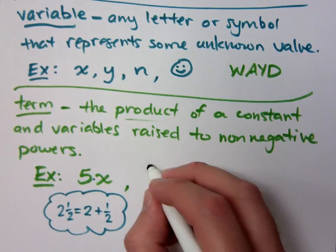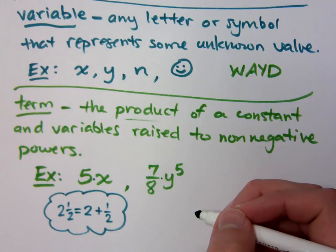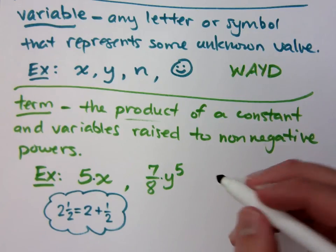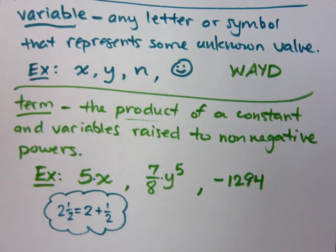I could pretty much put anything together. I could put 7/8 along with y to the 5th. That's an example of a term. I've got a constant, 7/8, times a variable raised to a non-negative power, to the power of 5. I mean, as stated before, even if I were to just write this number, negative 1,294, that number by itself is considered a term. So you have three different terms here that I have written out. So it doesn't have to have a variable. It says raised to non-negative powers. The number 0 is non-negative because it's 0. And so we could imagine this having x to the 0, but x to the 0, as long as x doesn't equal 0, anything to the 0 power is 1. So it would still be just negative 1,294.